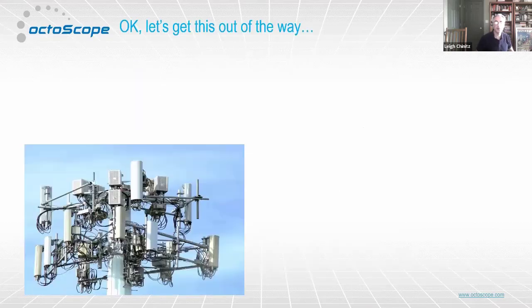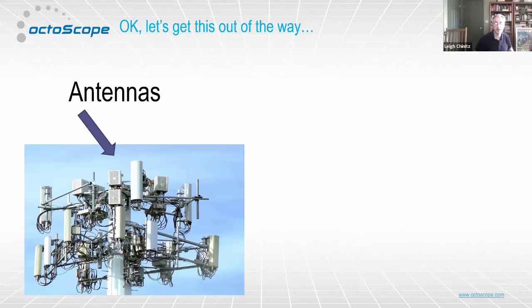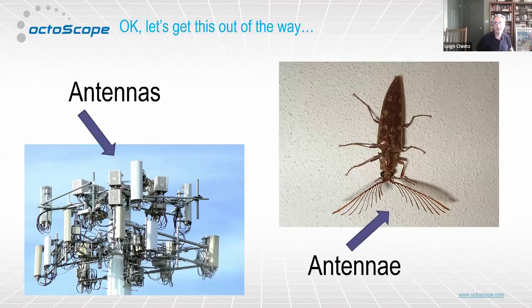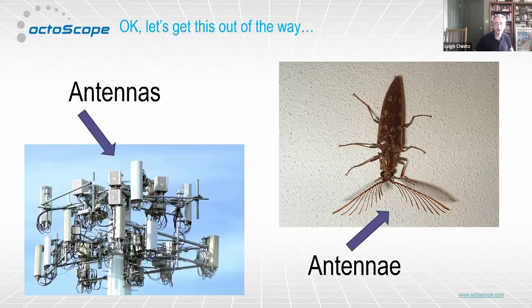Let's start by getting one thing out of the way — for the English-speaking members of the audience: these are antennas. These are antennae. When we talk about the kinds of antennas used for communication, we call them antennas. If you have antennae in your test bed, that's probably a bug. Pause for hysterical laughter for the bug joke.